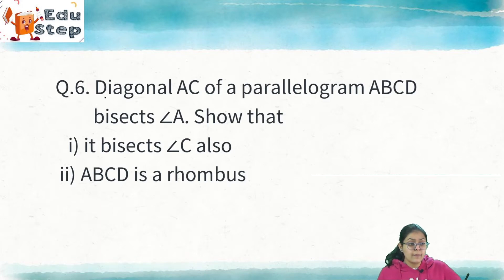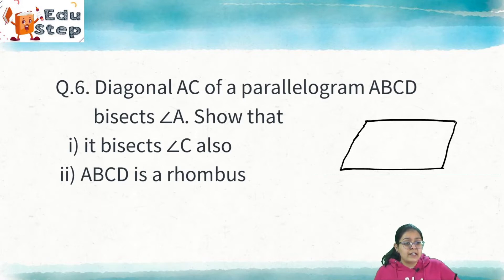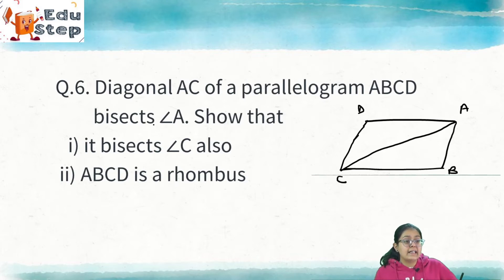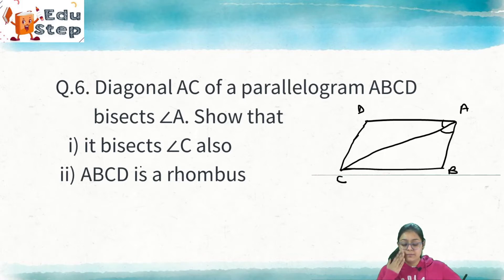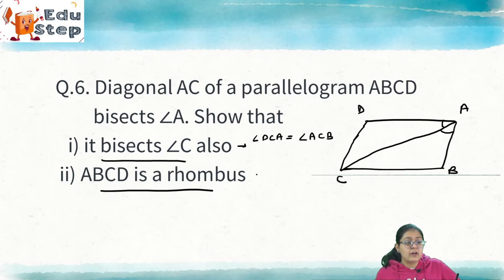Question 6: Diagonal AC of parallelogram ABCD bisects angle A. We have to show that it bisects angle C also, and that ABCD is a rhombus. Given that angle BAC = angle DAC (AC bisects angle A). To prove AC bisects angle C, we need angle BCA = angle DCA. To prove ABCD is a rhombus, we need AB = BC = CD = DA.